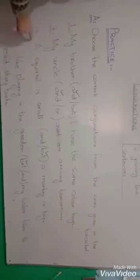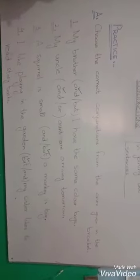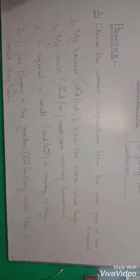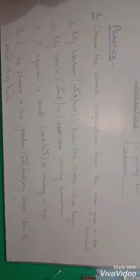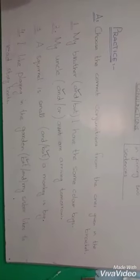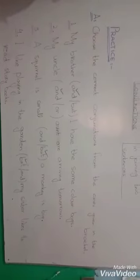Number third: A squirrel is small, bracket may and but, a monkey is big. Here are two opposite words, two opposite sentences. A squirrel is small but a monkey is big.